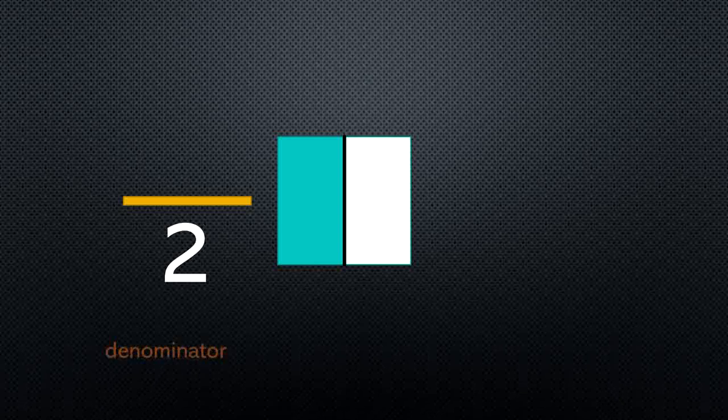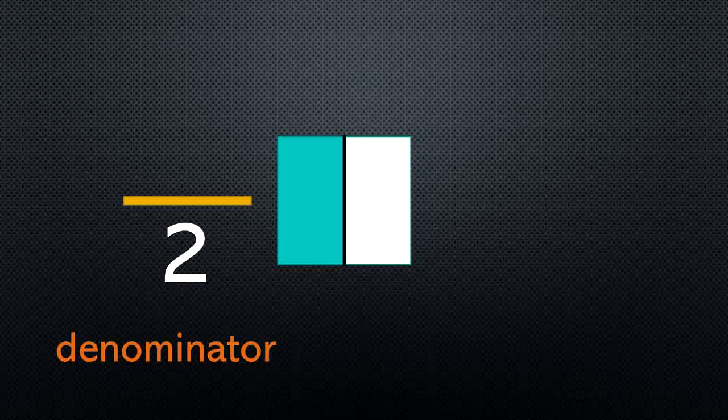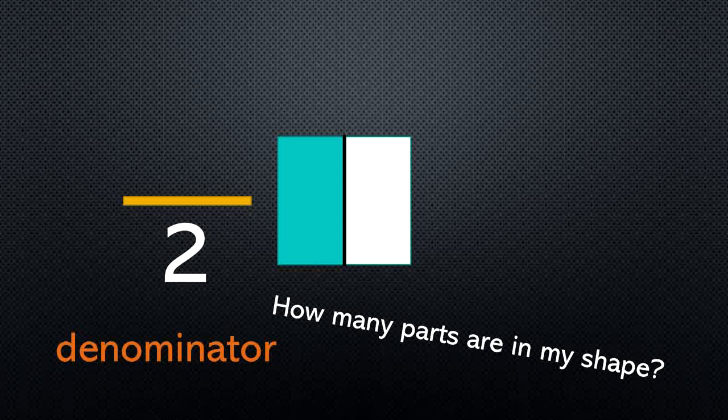First, I need to draw a line. Now, we need to figure out what goes on the bottom and top of this line. On the bottom, I'm going to put a 2, and that's called our denominator. Denominator is just a fancy word for telling how many parts are in my shape.